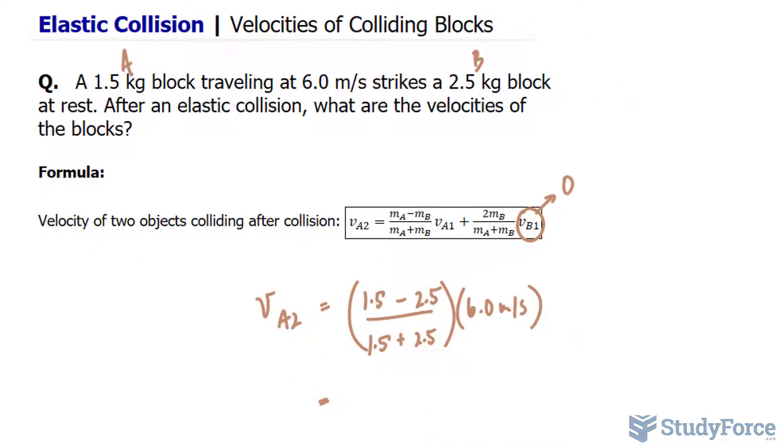Now let's calculate this. 1.5 minus 2.5 makes negative 1. And in the denominator, 1.5 plus 2.5 is 4. So that very first part is negative a quarter. Multiplying that by 6, we get negative 1.5. What this suggests is that the block that is striking the other will rebound negative 1.5 meters per second. The negative suggests that it will move in the opposite direction in which it was striking the one that was at rest.